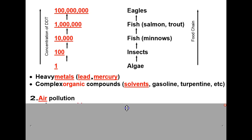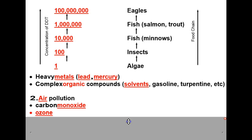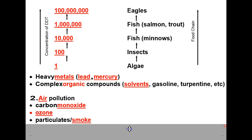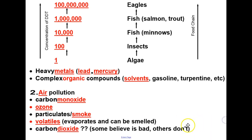Air pollution is another type of pollution of great concern. This includes carbon monoxide, ozone, particulates including smoke, volatiles which are evaporates that can be smelled, and carbon dioxide — some believe it is harmful, others believe it is not.